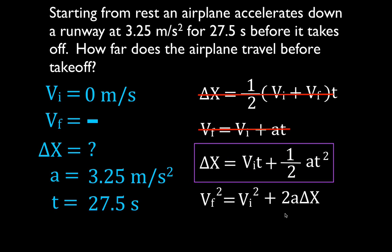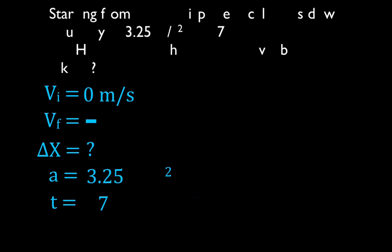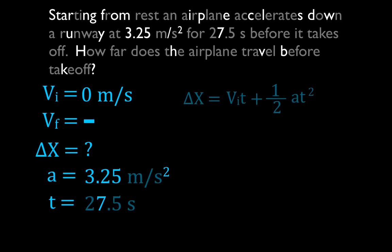Let's also check the fourth equation — it also has delta x in it, but it also has the final velocity, and we don't know the final velocity. So we confirmed: we wrote down all five variables, filled in what we knew, and chose the correct equation. Now we'll bring that equation to the next slide and fill in the values.